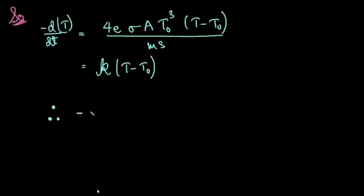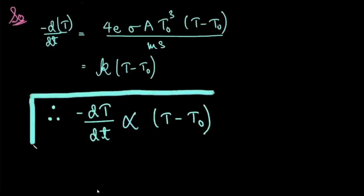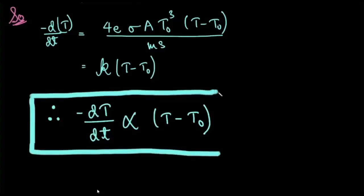Therefore, -dT/dt is directly proportional to T minus T₀ — the rate of fall of temperature is directly proportional to T minus T₀. This was the proof of Newton's Law of Cooling. If you have any doubt or problem, feel free to comment in the comment section. If you have any criticism, you can share that as well. If you liked this video and learned something new, you can like the video, share it among your friends, and subscribe to our channel Clarity Education, and wait for our new videos. Till then, goodbye and thank you.